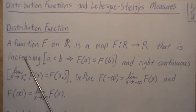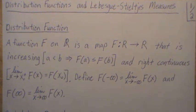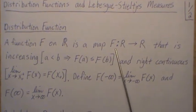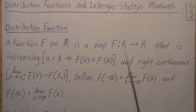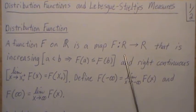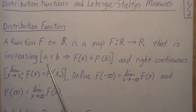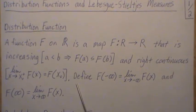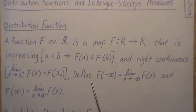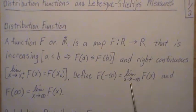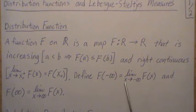A distribution function is a function on R, and it's a map from the real numbers to the real numbers, and those should be script R's, that is increasing and right continuous.